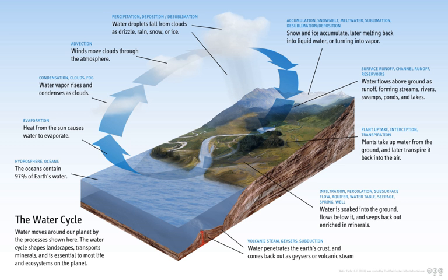Transpiration: the release of water vapor from plants and soil into the air. Percolation: water flows vertically through the soil and rocks under the influence of gravity. Plate tectonics: water enters the mantle via subduction of oceanic crust, and returns to the surface via volcanism. The water cycle involves many of these processes.